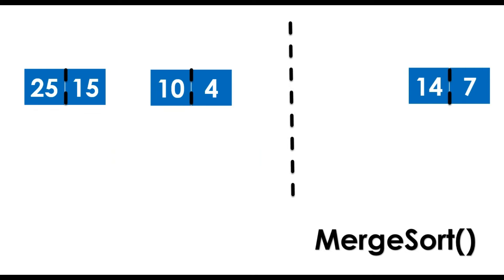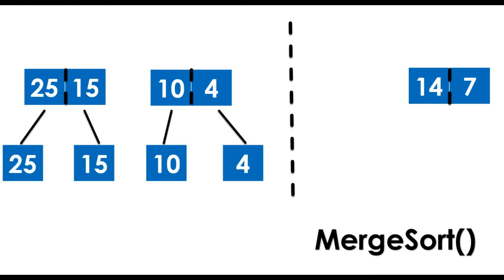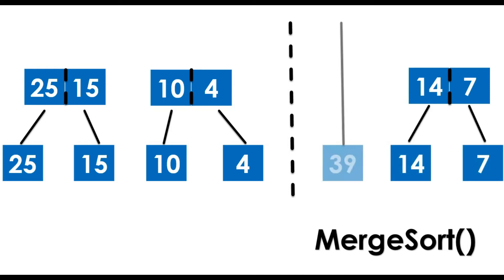After successfully applying the Merge Sort function, the current array has been divided down to individual array list values. This is the goal of Merge Sort — it recursively divides the given array until each value becomes 1. At this point, we stop using Merge Sort and proceed to the Merge function.